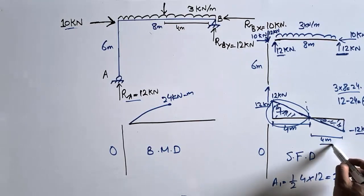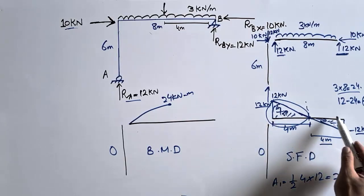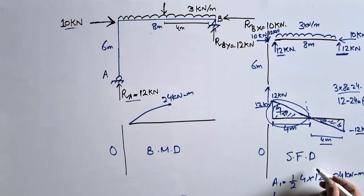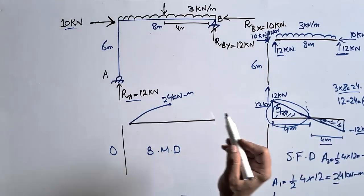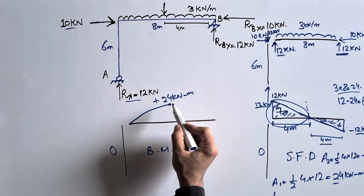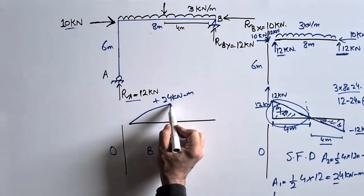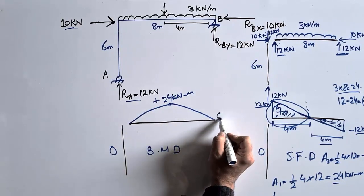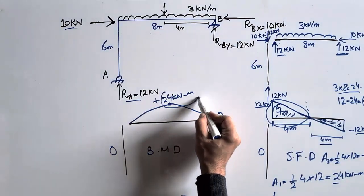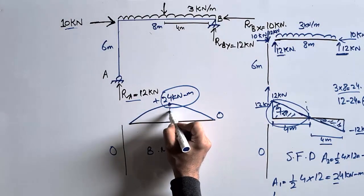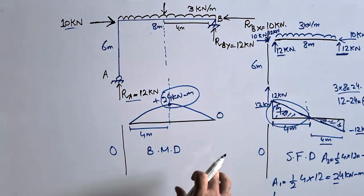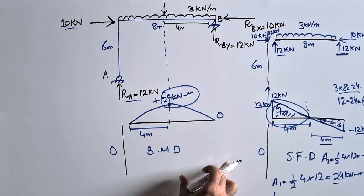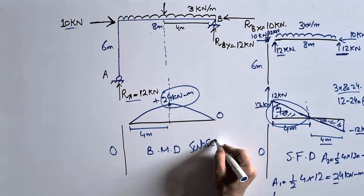The second triangle also has a base of 4 meters and height of 12 kN, so its area is also ½ × 4 × 12 = 24 kN·m, but negative. Adding −24 to +24 gives zero, so the bending moment returns to zero at the right end. The maximum bending moment is 24 kN·m at midspan, at the 4-meter point. This is how to draw the shear force and bending moment diagram for a frame. Hope you understand — don't forget to subscribe our channel, thank you for watching.